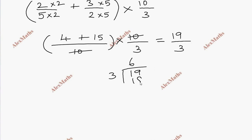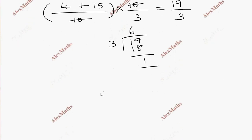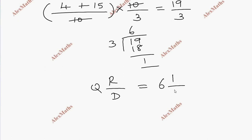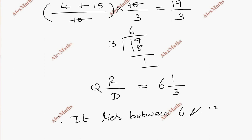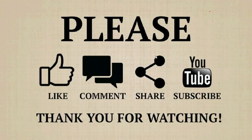6 times 3 is 18, with a remainder of 1. Using the formula: quotient plus remainder by divisor, we get 6 remainder 1 and divisor 3, so the answer is 6 and 1 by 3. Therefore it lies between 6 and 7.